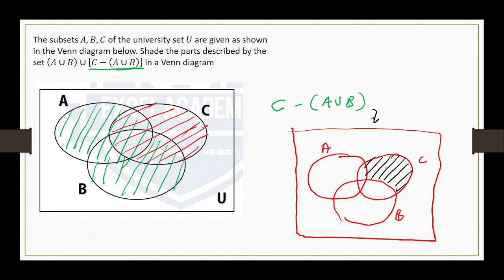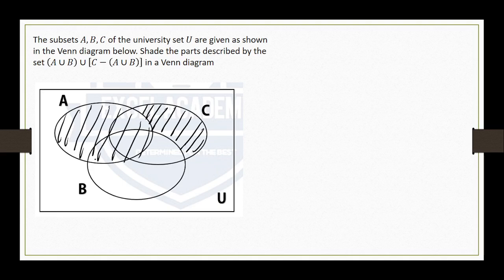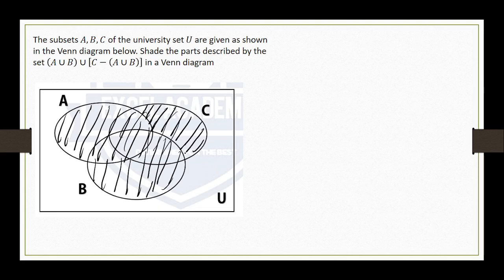After finding C minus (A union B), which is just this shaded part, we have been told to unite it with A union B. Uniting C minus (A union B) with A union B just takes us back to the full combined region. So we shade A union B as well. If you observe, this entire set is simply A union B union C. So A union B union C is the final answer for this particular question.